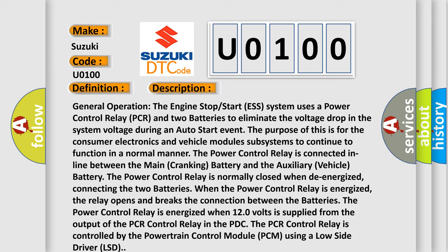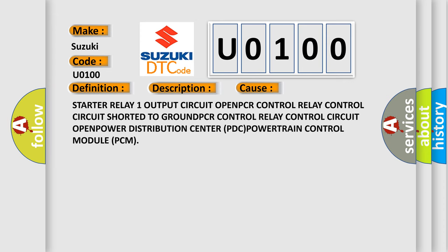The power control relay is energized when 12 volts is supplied from the output of the PCR control relay in the PTC. The PCR control relay is controlled by the Powertrain Control Module (PCM) using a low side driver (LSD). This diagnostic error occurs most often in these cases: Starter relay output circuit OPEN, PCR control relay control circuit shorted to GROUND, PCR control relay control circuit OPEN, Power Distribution Center (PDC), or Powertrain Control Module (PCM) fault.